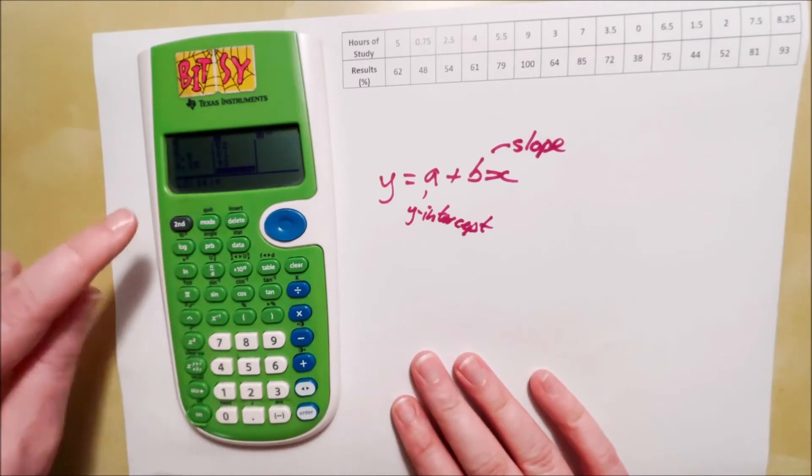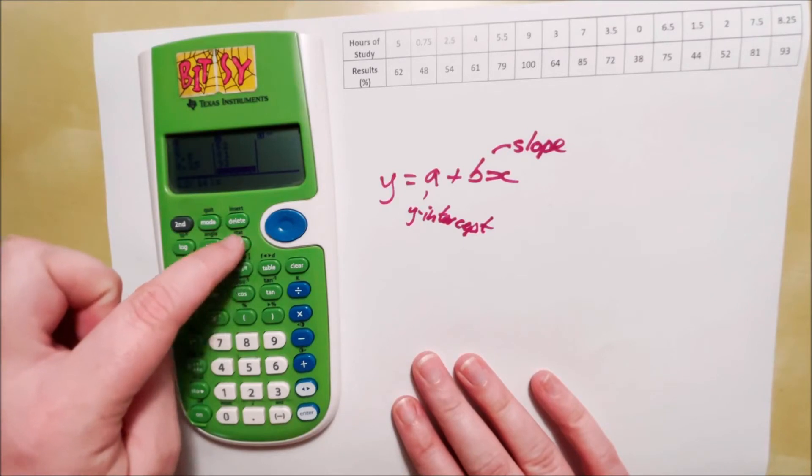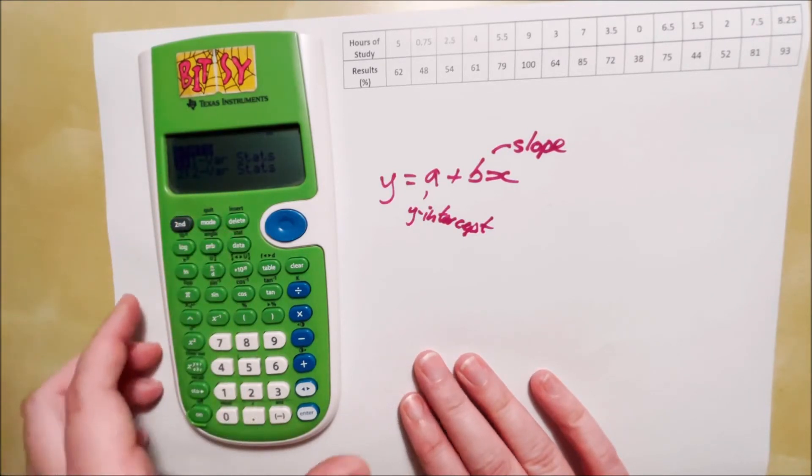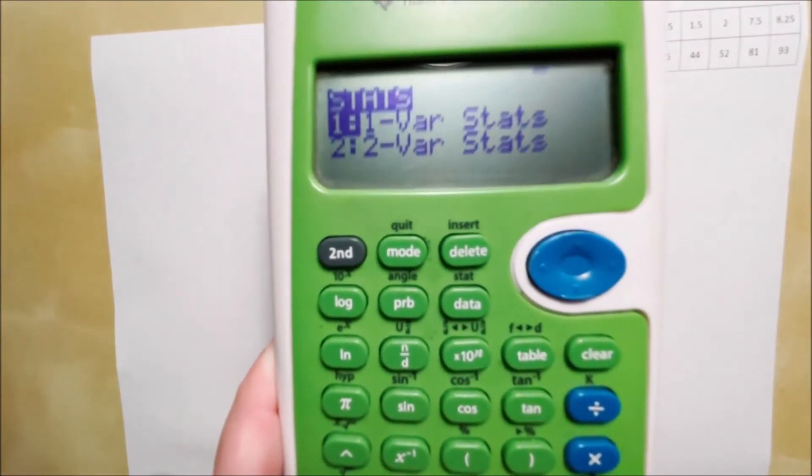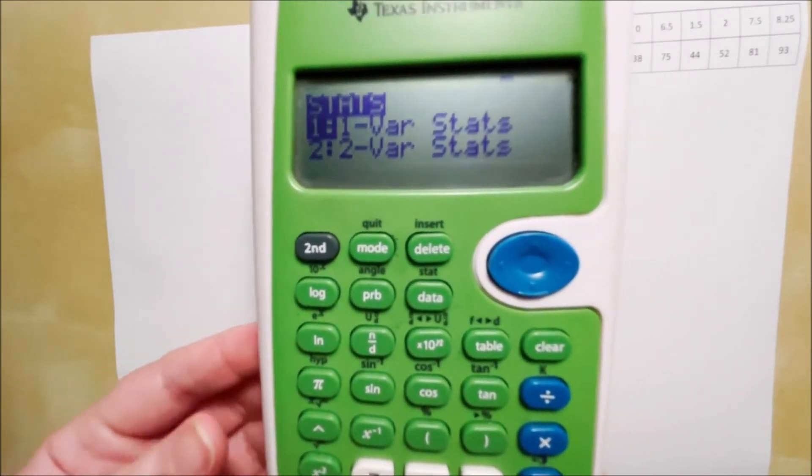Okay, so now to access the stats, we press second function, and then that same button. You'll notice above it, it says stat. So second function, stat. We have two options. One var would mean univariate data, two var means bivariate data. So of course, we want number two there.